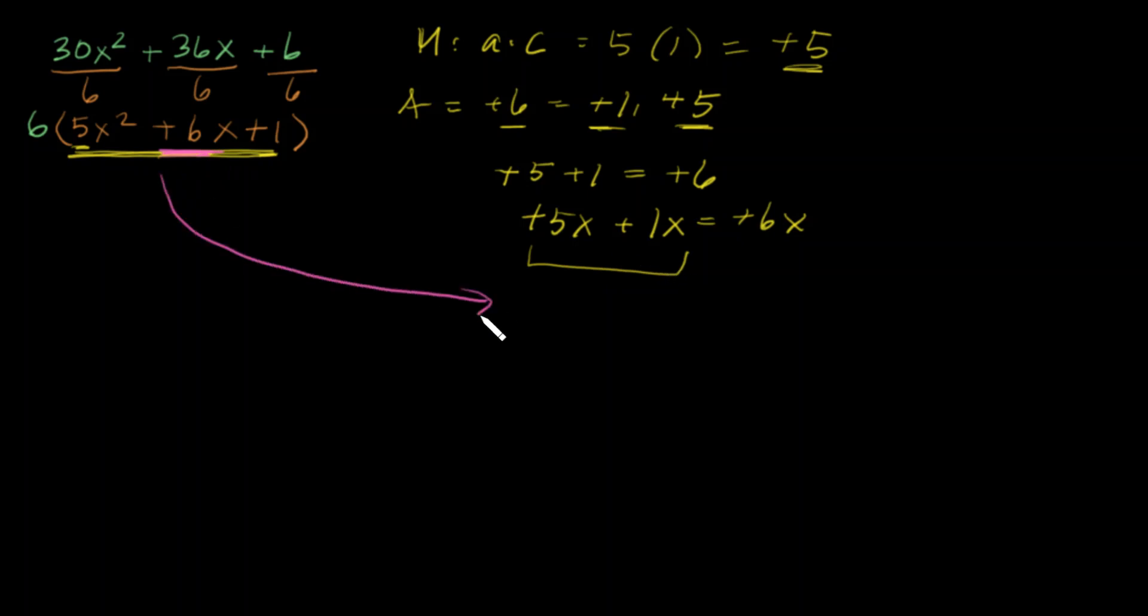So let's go ahead and take this out. It's going to be 5x squared—that's the first term. Now this middle term is going to be written as two terms: 5x plus 1x, and then the last term plus 1.